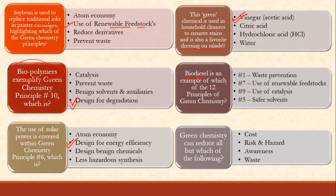Biodiesel is an example of which of the 12 principles of green chemistry? Biodiesel has replaced conventional fuel — it is blended with diesel. Normal vegetable oils are used and by transesterification they are converted into biodiesel, similar to bioethanol. What you have done is used a renewable feedstock — the oil — and transesterified it, so this is principle 7: use of renewable feedstock.